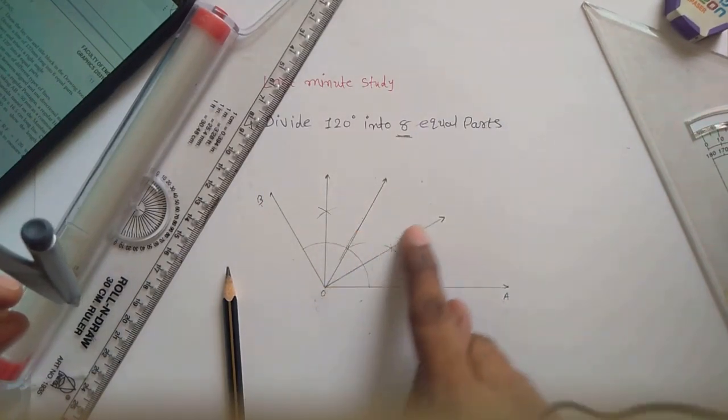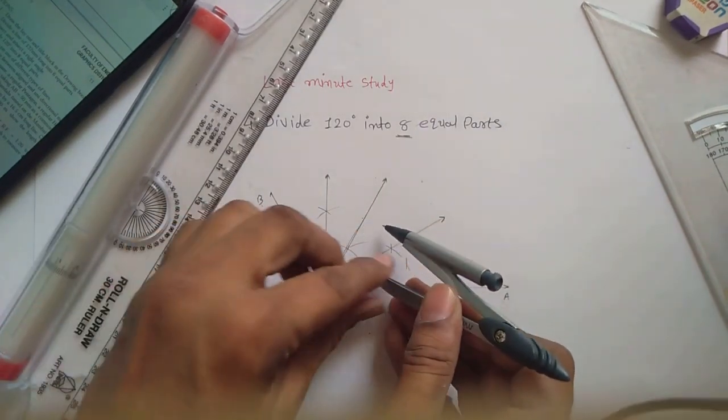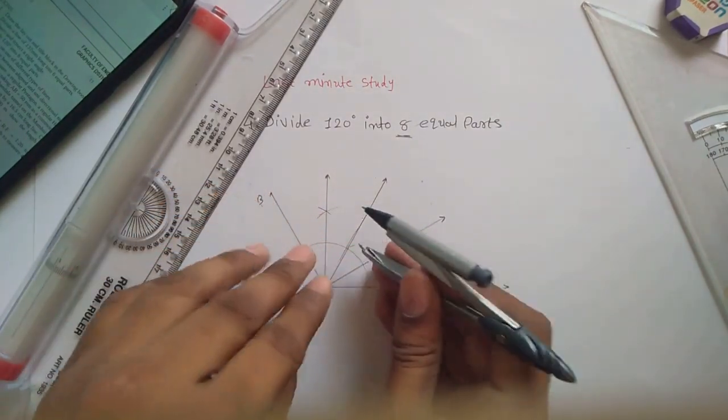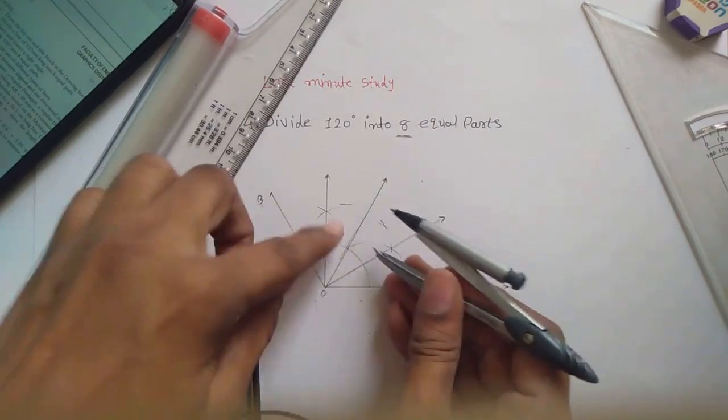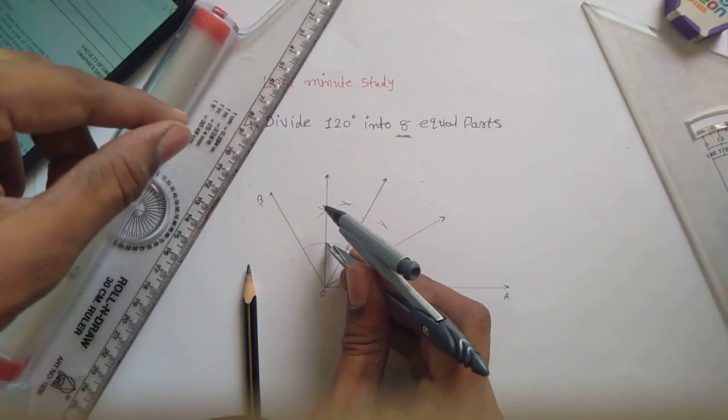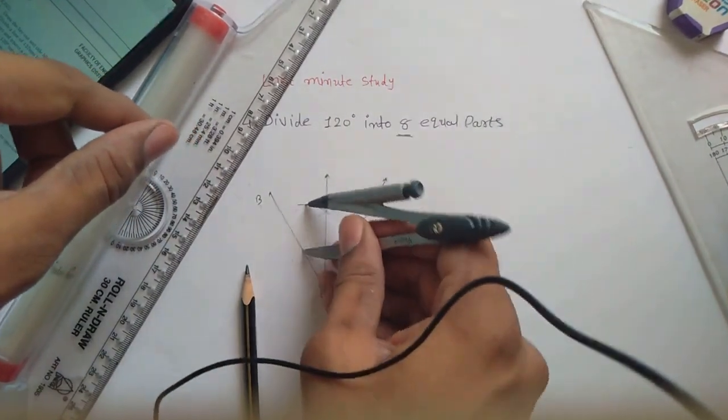Now you have to consider this as an individual problem and bisect it again like this, finding the intersecting point. Same way, for this division find the intersecting point, and for this fourth division, find the intersecting points.